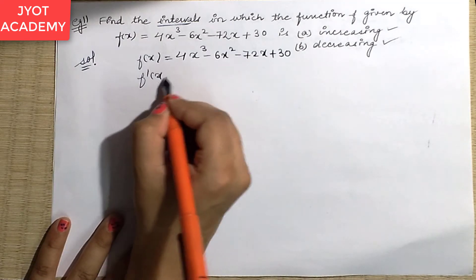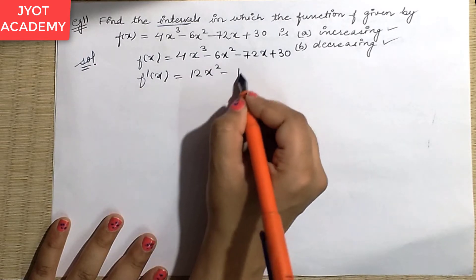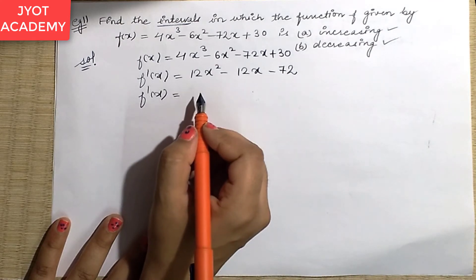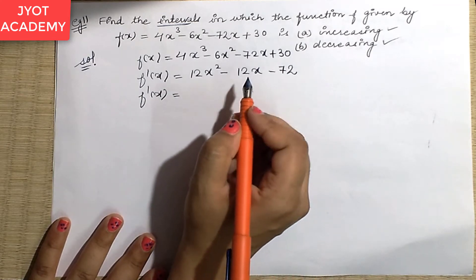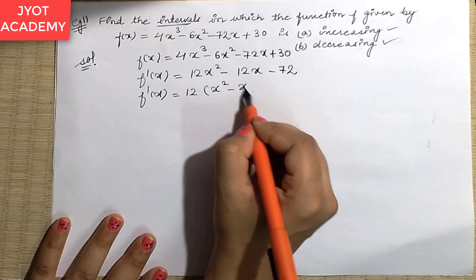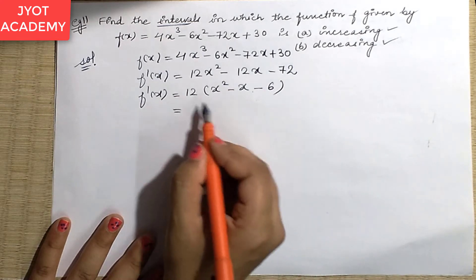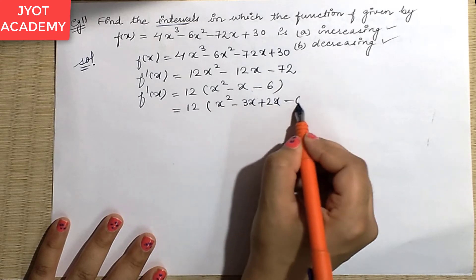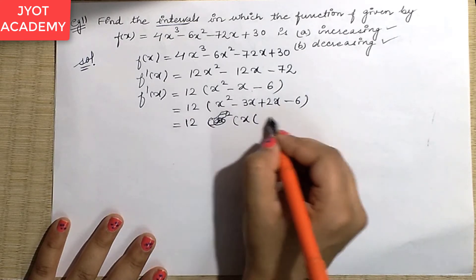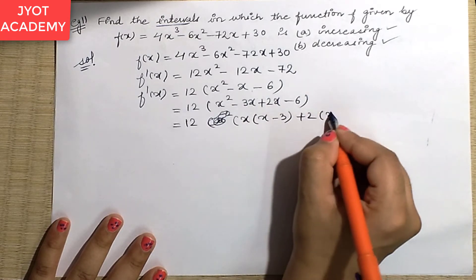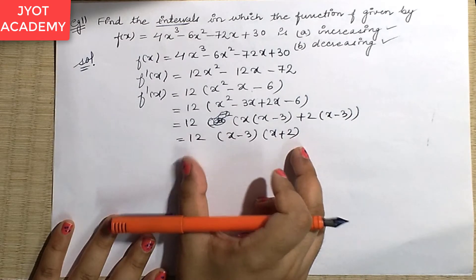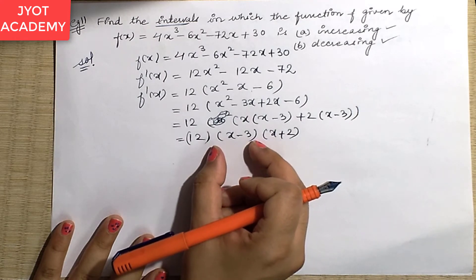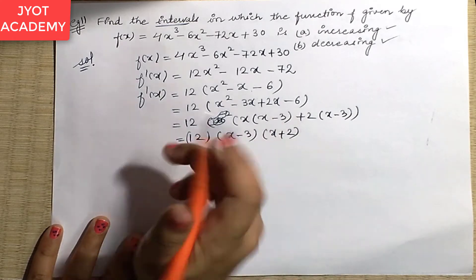First of all, I am differentiating it with respect to x. So f'(x) simplifies — we have 12 as a common factor. Then we have x² - 3x + 2x - 6, which gives us the factors. So f'(x) = 12(x - 3)(x + 2), where 12 is positive.